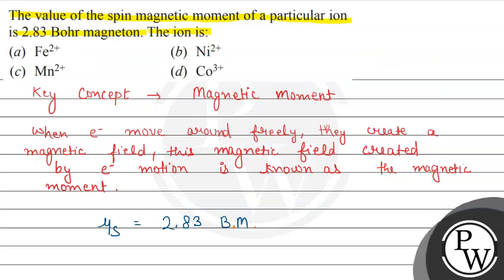So the correct answer is option B only — Ni²⁺. Options A, C, and D are incorrect. This was the whole solution. Hope you understood it well. Best of luck. Thank you.